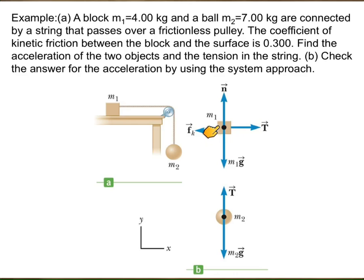For mass 1, there is gravity downward, a normal force upward since it's in contact with the surface, a tension force pulling it toward the right in the positive x-direction, and the frictional force in the opposite direction — because tension will tend to move the mass in the positive x-direction. The frictional forces are always in the direction that opposes the tendency of motion. If the mass will tend to move in one direction, the force of friction will be just opposite to that direction.